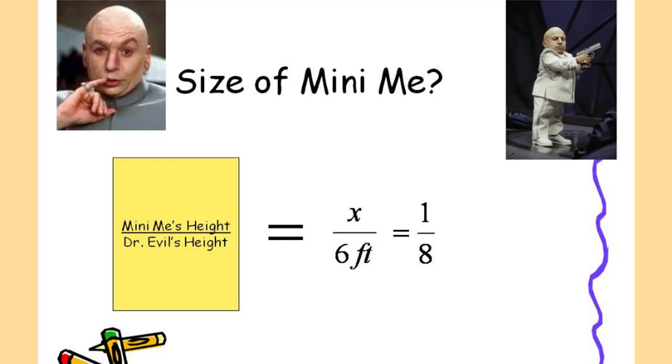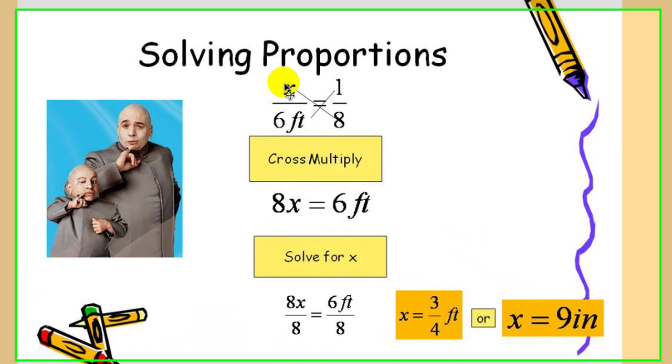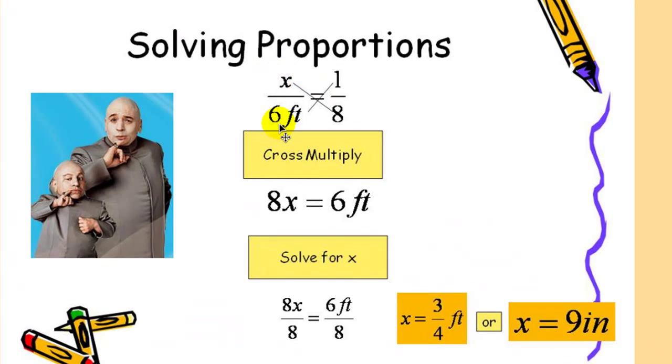To solve proportions you can cross multiply. So to find Mini-Me's real height, I would always say that Dr. Evil was six foot, but you could use different numbers. You can say well what if he's five foot six inches, so you can change that number. But based on the fact of using six feet, we find out that he would be three-fourths of a foot or nine inches, which would be impossible.